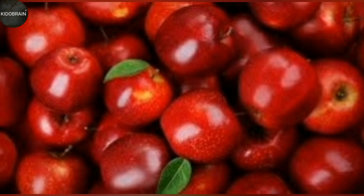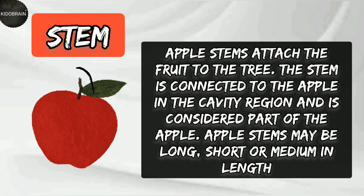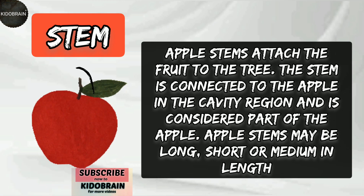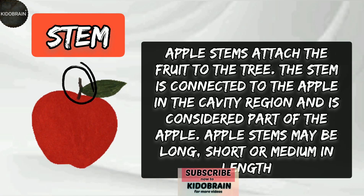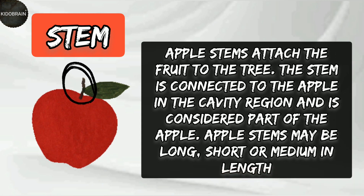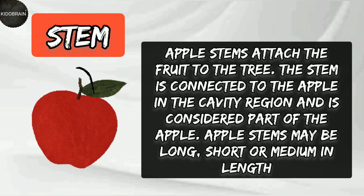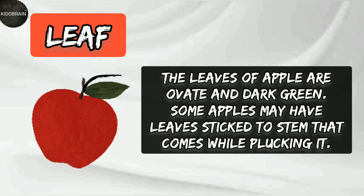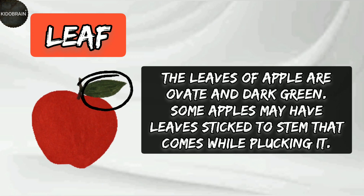Let's learn a little more about each part. Stem: apple stems attach the fruit to the tree. The stem is connected to the apple in the cavity region and is considered part of the apple. Apple stems may be long, short, or medium in length. Leaf: the leaves of apple are ovate and dark green. Some apples may have leaves stuck to the stem that come while plucking it.